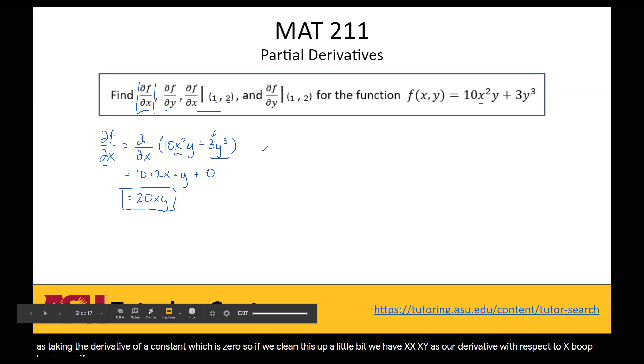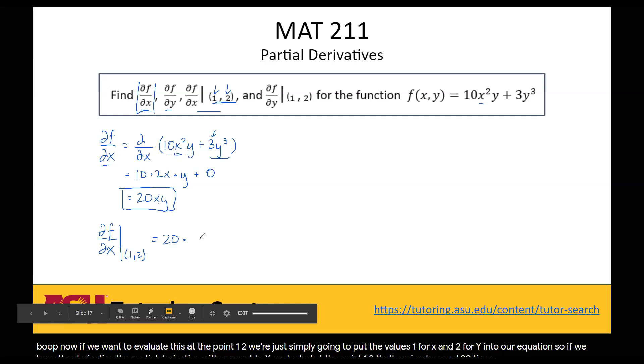Now, if we want to evaluate this at the point (1,2), we're just simply going to put the values 1 for x and 2 for y into our equation. So if we have the partial derivative with respect to x evaluated at the point (1,2), that's going to equal 20 times 1 times 2. So it'll equal 40.